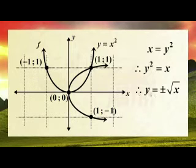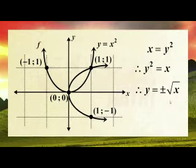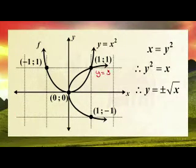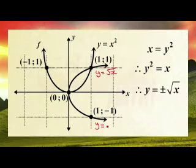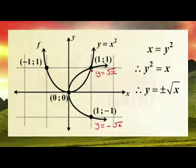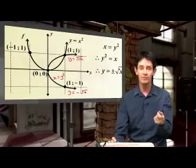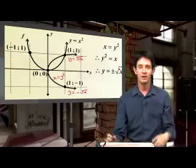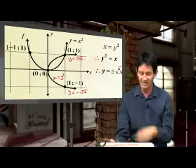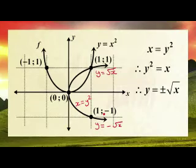Y squared equals x, so y could be plus or minus the square root of x if you square root both sides. The top part of the graph is y equals the positive square root of x — isn't that amazing? Did you ever know what the square root of x looks like? There it is. The top is y equals positive square root x, and the bottom one is y equals negative square root x. The square root of x is a parabola on its side — it was standing up and went down on its side. The x and y's are swapped around.